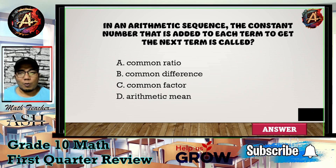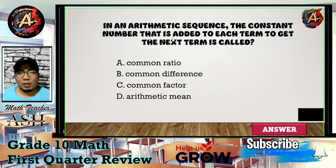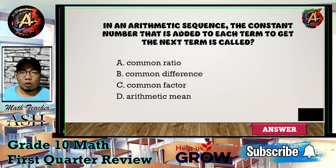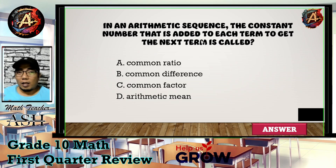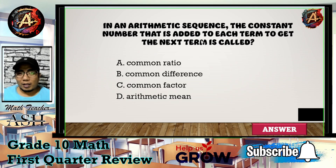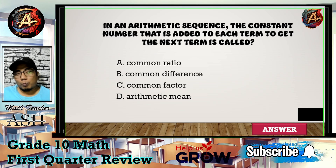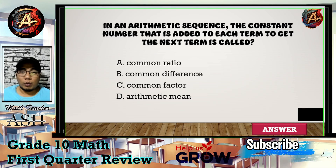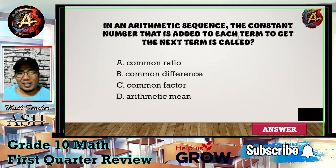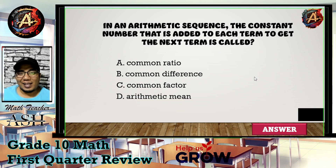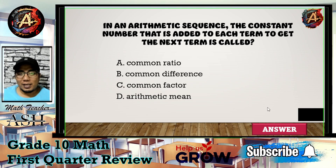This question is very easy. In an arithmetic sequence, the common term used to proceed to the next term is called the common difference. The correct answer is letter B.